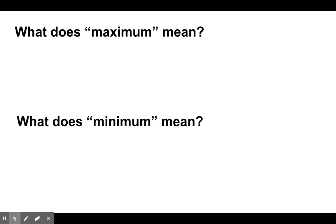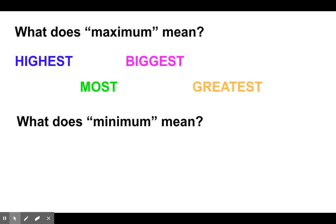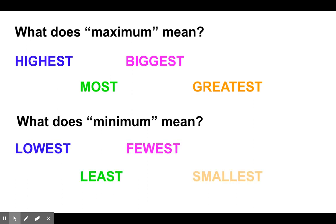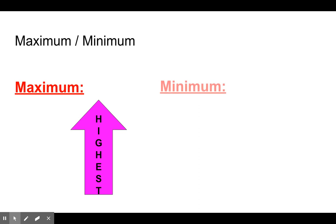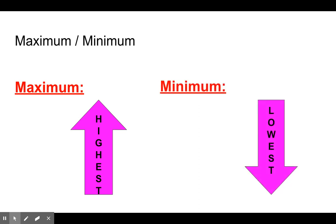If we want to think about maximum and minimum, what words come to mind when you think of maximum? You might think of highest, most, biggest, or greatest. For minimum, you might think of lowest, least, fewest, smallest. In graphs, maximum is the highest point on the graph, and minimum is the lowest point on the graph.